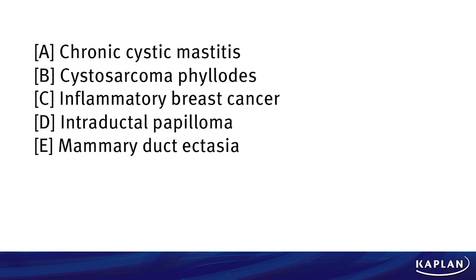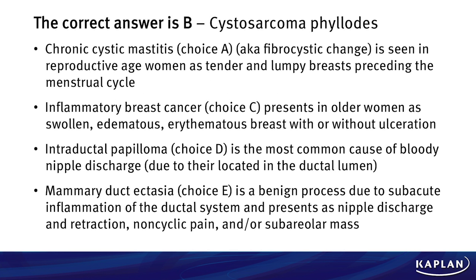The correct answer here is B. Cystosarcoma phylloides. Let's review some of the other options. Chronic cystic mastitis, which is choice A, also known as fibrocystic change, is seen in reproductive age women and presents as tender and lumpy breasts which precede the menstrual cycles.